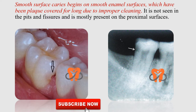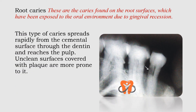Root caries are caries found on the root surfaces that have been exposed to the oral environment due to gingival recession. In the x-ray shown, significant bone loss has occurred leaving the root completely exposed to the oral environment. If this root is plaque covered, caries spreads through the outer layer of cementum, then rapidly along the dentine to reach the pulp.